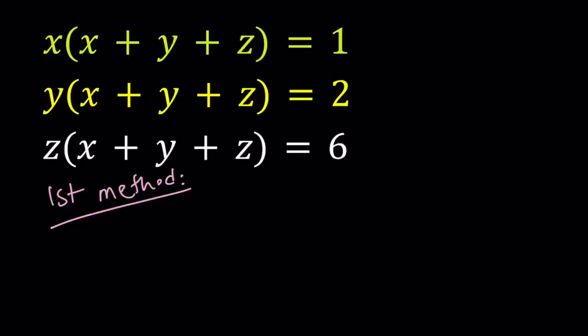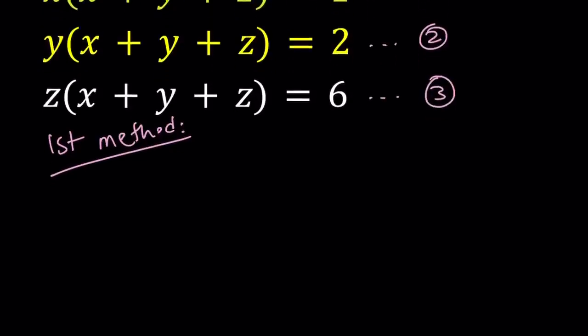So for my first method, I'm going to do the following. Let's go ahead and number these equations. Let this be equation number one, let this be equation number two, and let this be equation number three. First of all, I'm going to divide one by two. Let's go ahead and do that and simplify it. And then I'll be dividing one by three. You could also do two by three. It doesn't matter.